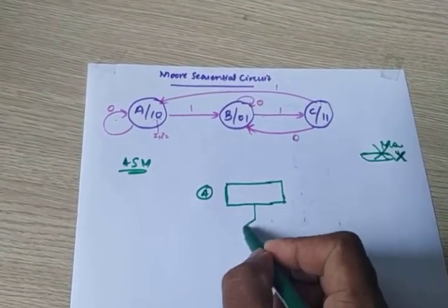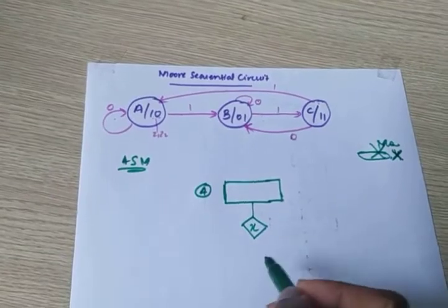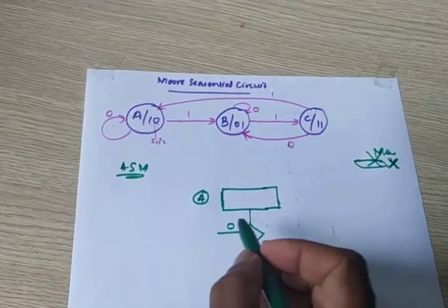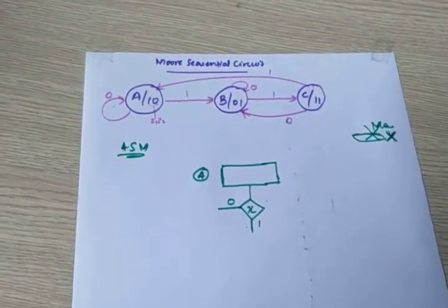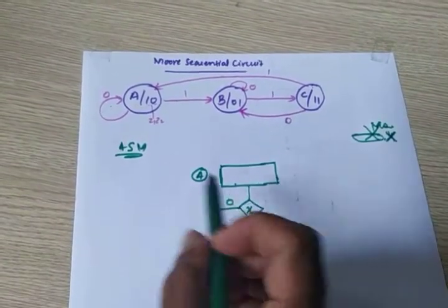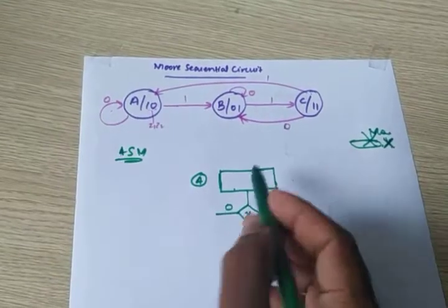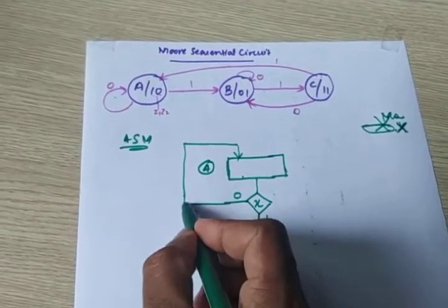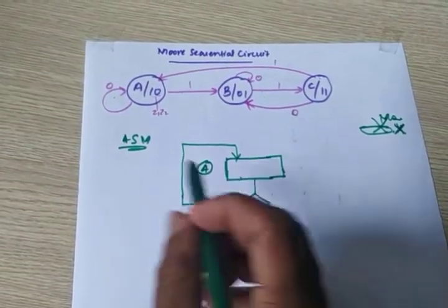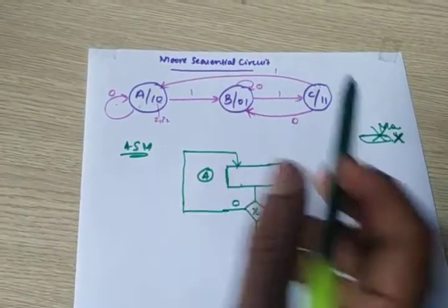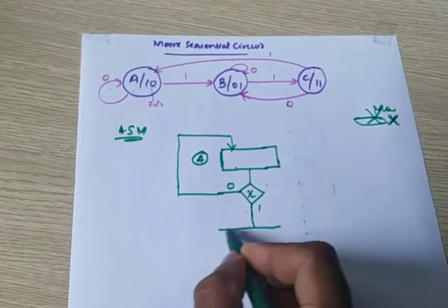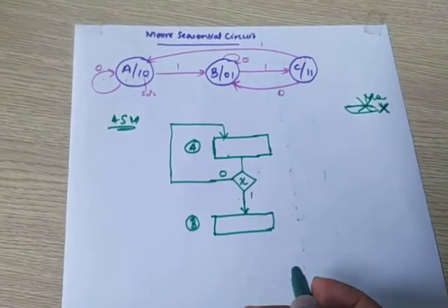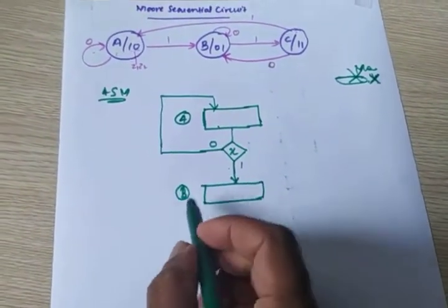For zero, we need to write the condition box — this is the condition box for X, it can be 0 or 1. If it is 0, state A zero comes, meaning the same state only, so we go back to the same state A. In state A, if one comes, it goes to state B. So another state B is drawn for the one input.